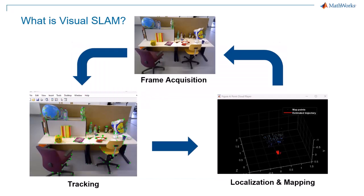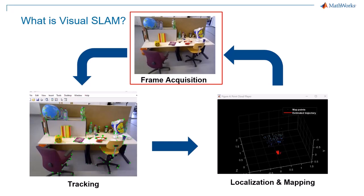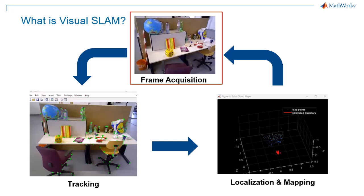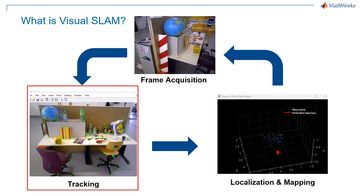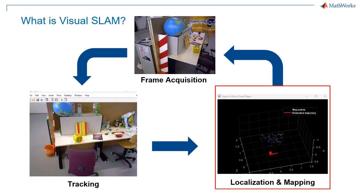It uses visual data, typically gathered from one or more cameras, to identify distinct features in the environment. By tracking the movement of these features between different frames, Visual SLAM algorithms can infer the system's trajectory and build up a consistent map.